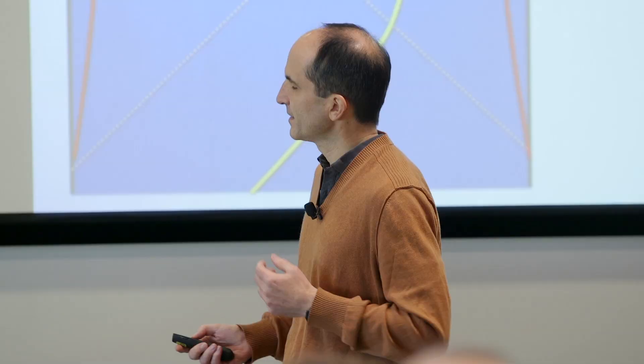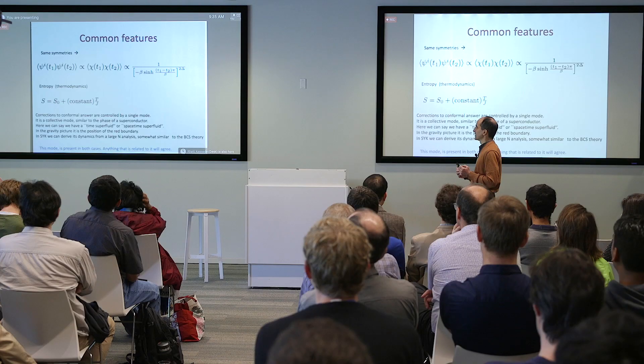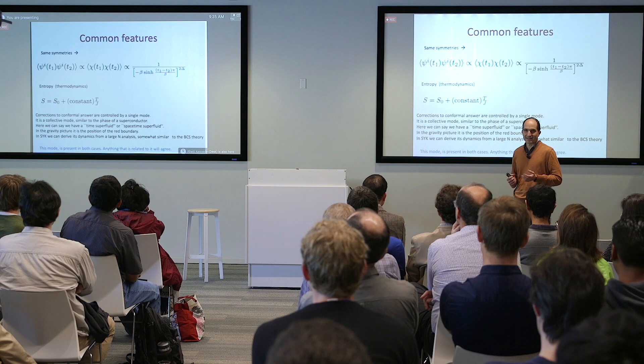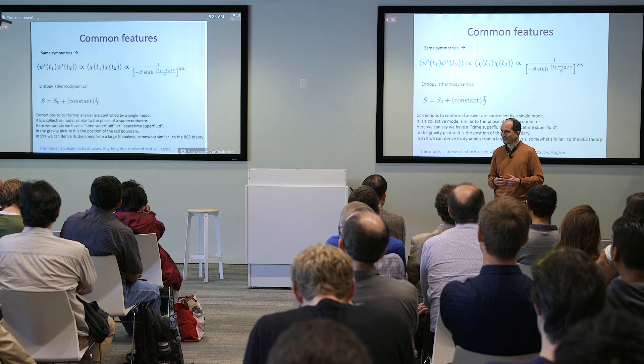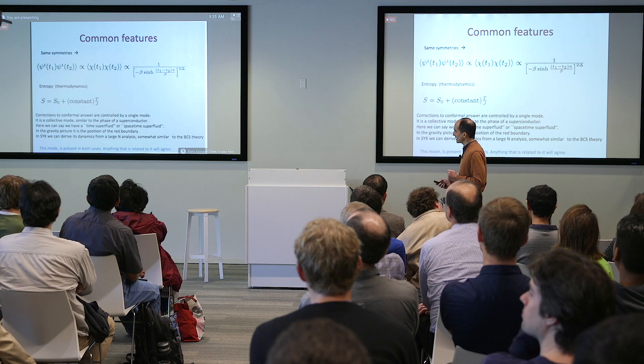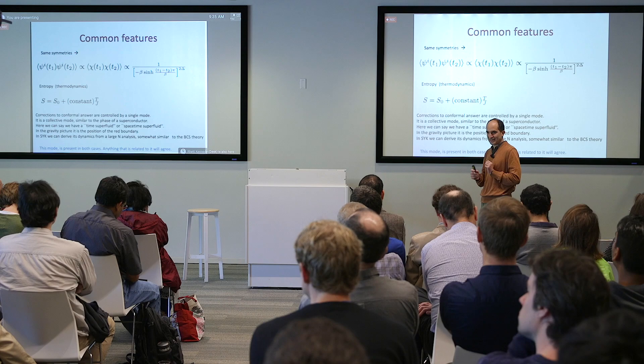In the gravity description, that collective degree of freedom has to do with the position of the boundary—where that boundary is sitting, moving in or out—so it's just the quantum mechanical degree of freedom of the position of that boundary. In SYK, you can also derive it from a large-n analysis similar to BCS theory of superconductivity—how you derive collective degrees of freedom in large-n systems. This mode is present in both cases, and anything having to do with its dynamics will agree between the black hole case and the SYK model.